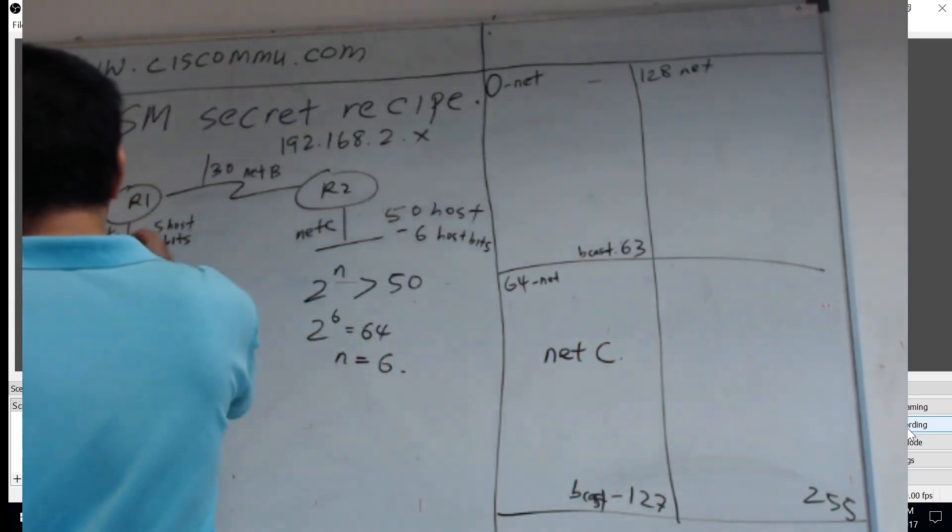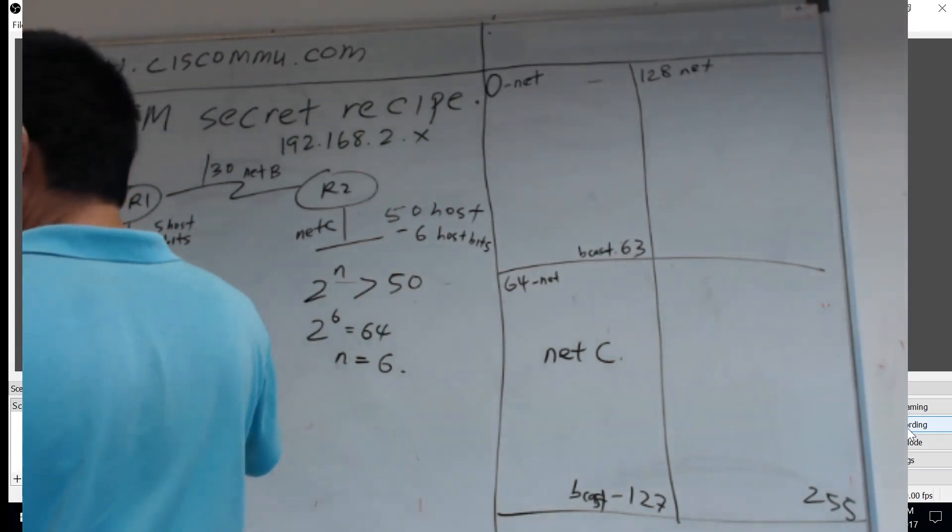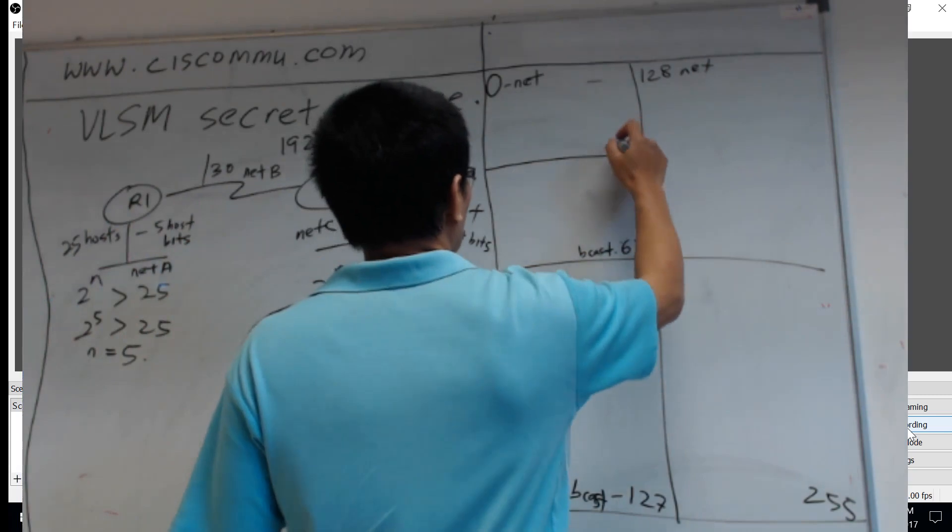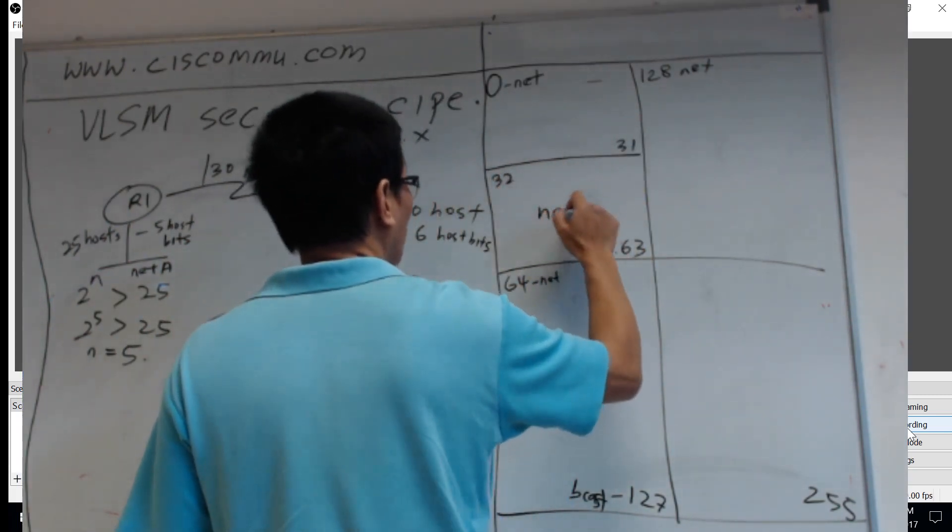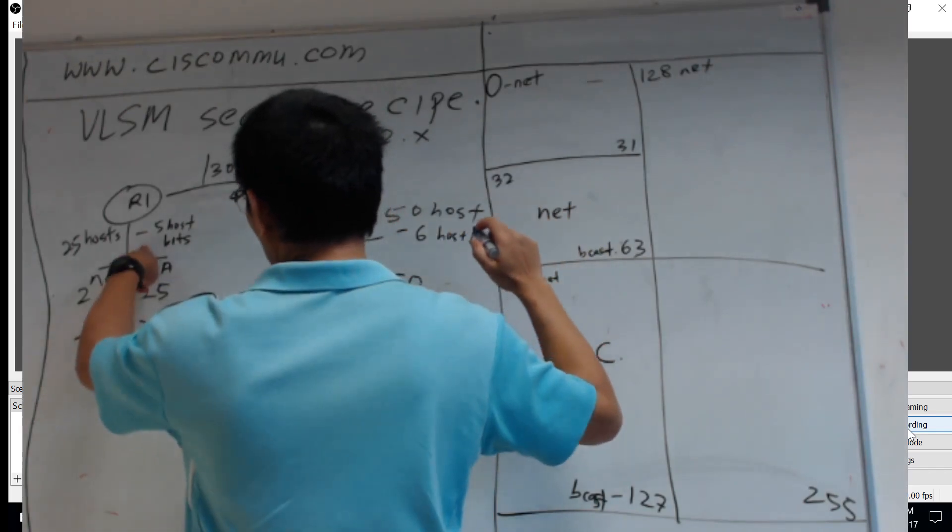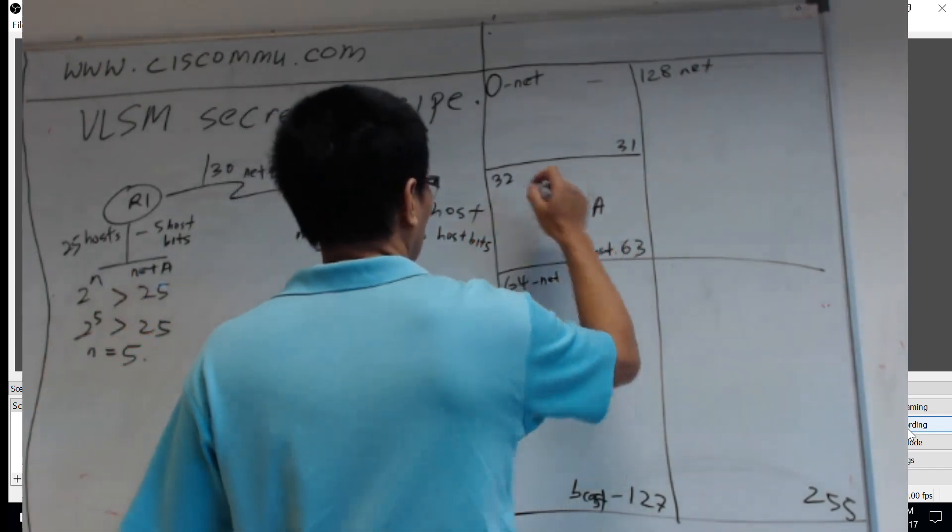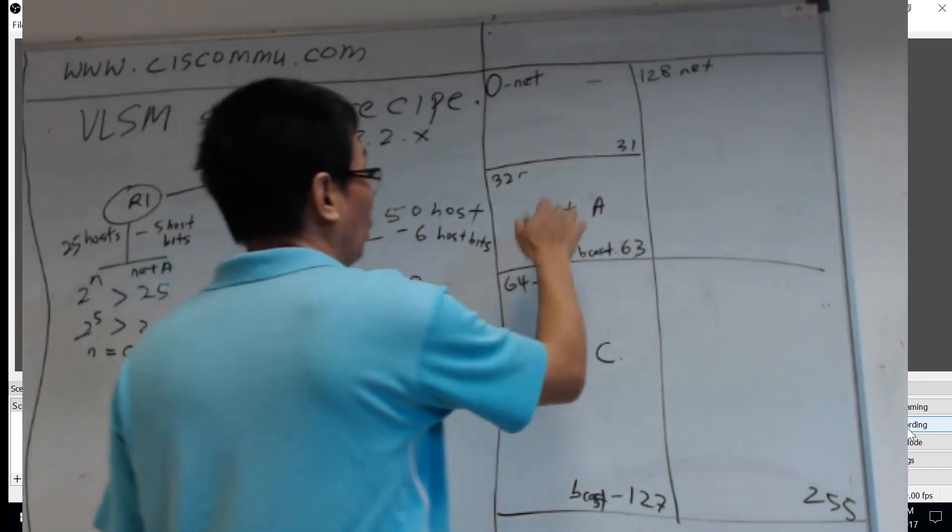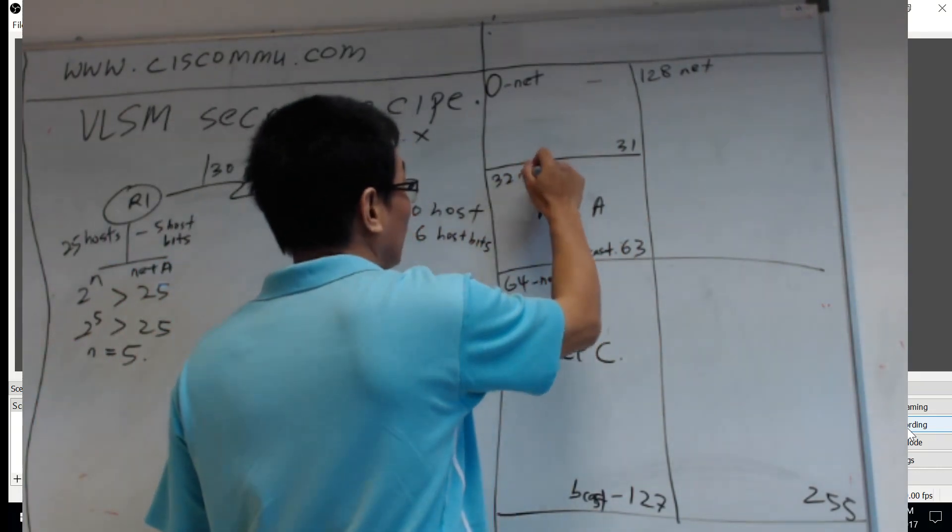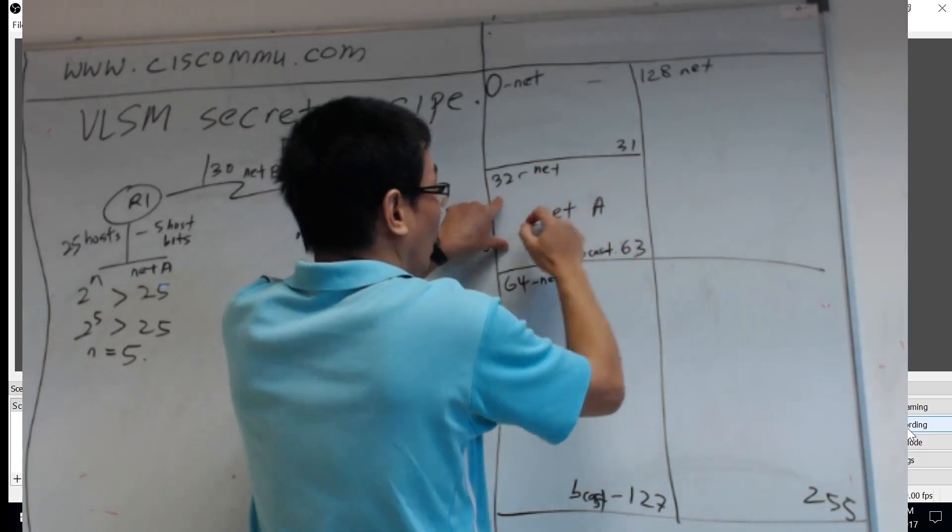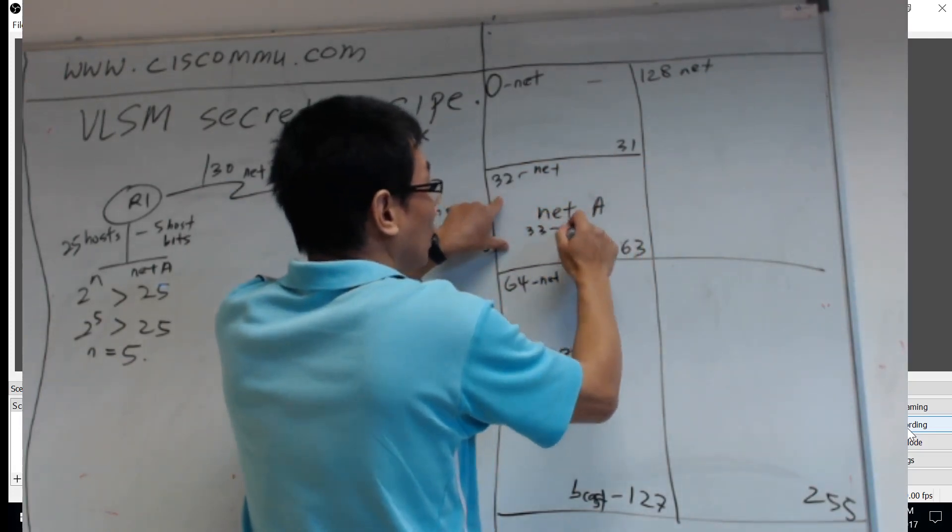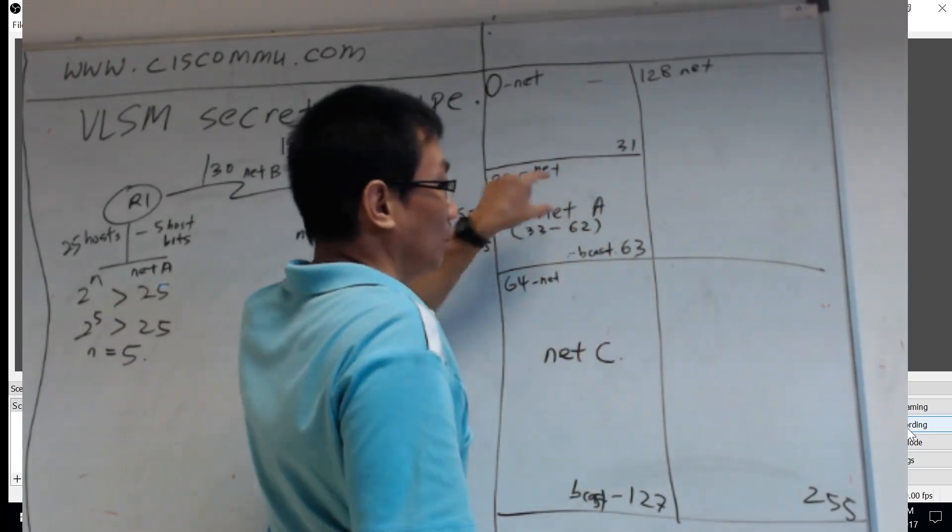Then here, Network A. You've got 5 bits, so you need 32. So you put half. 31, 32. Then you can put here Network A. The network address for Network A is this one. The broadcast address is this one. The host range is from 33 up to 62. That's the host range.